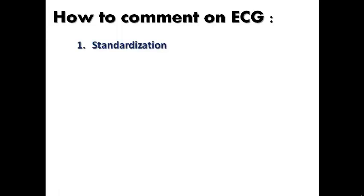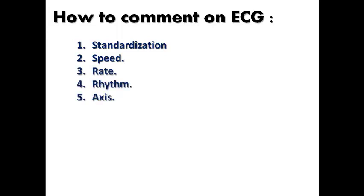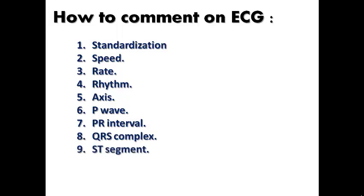Number one is the standardization and number two is the speed — these are the first two things to check in the ECG paper before interpreting the ECG itself. Number three is the rate. Number four is the rhythm. Number five is the axis, and here we mean the axis of the ventricular depolarization mainly. Number six is the P wave, then PR interval, then the QRS complex, then the ST segment, then the T wave, and finally the QT interval.